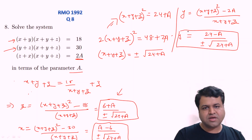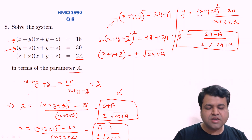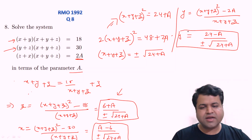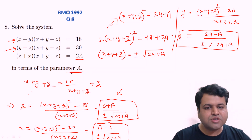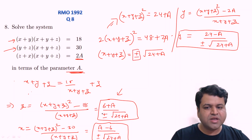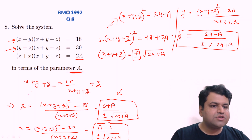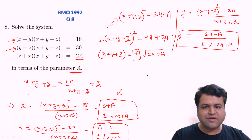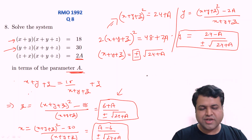That was a straightforward question as far as RMO level is concerned. We just needed to find x, y, z in terms of a. The key catch is to write both plus and minus signs — there are two sets of values for x, y, and z. Let's move to question number 9 of year 1992.